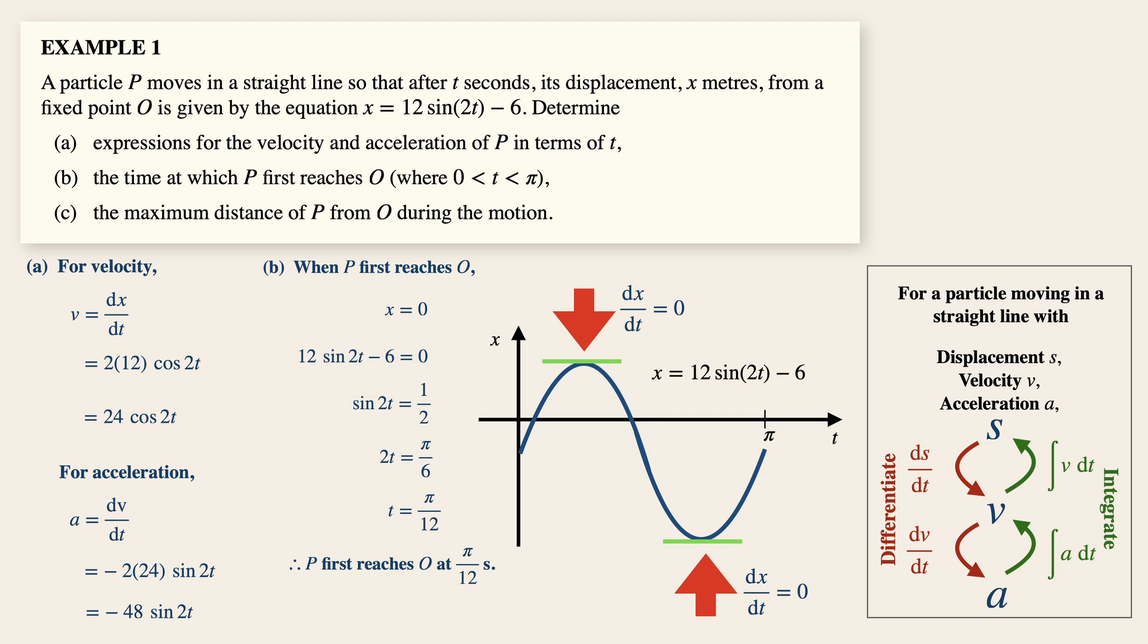So next time when you see other questions asking you about maximum height, dh over dt is equals to zero. Or maximum velocity, dv over dt is equals to zero. And maximum acceleration, for example, dA over dt is equals to zero. And all these will help us find the time t where the maximum happens.